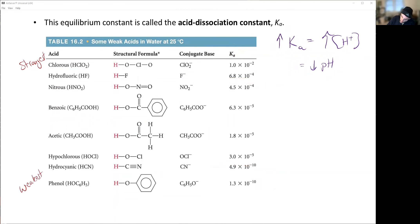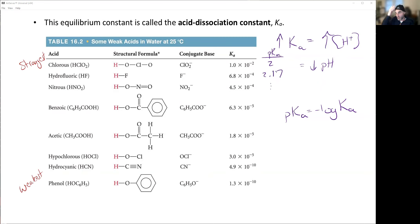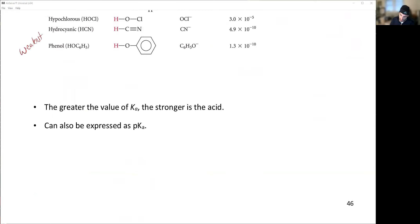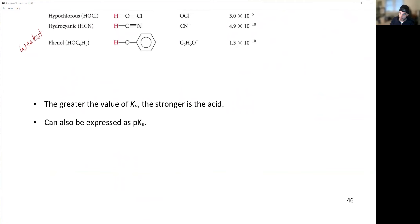pKa is the negative log of Ka. If we calculate pKa for these values, we find the first is 2, the second is 2.17, and so on. Those values just make numbers simpler instead of using long Ka notation. We won't use pKa as much, but recognize this equation and be able to convert back and forth. The greater the Ka, the stronger the acid — and it can also be expressed as pKa.